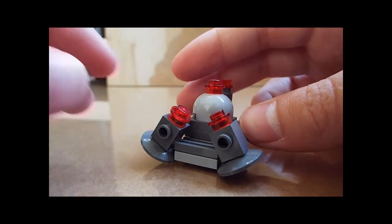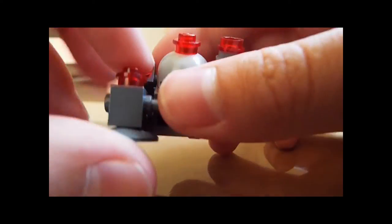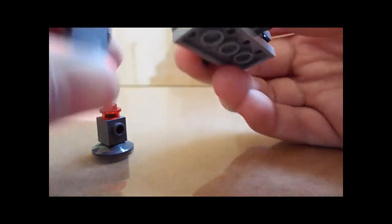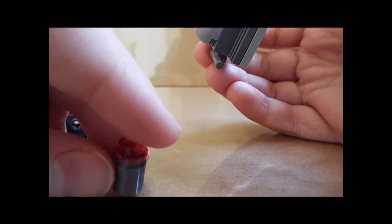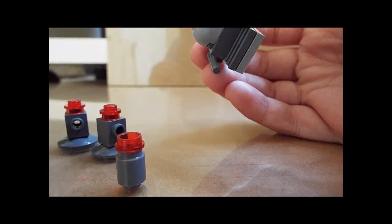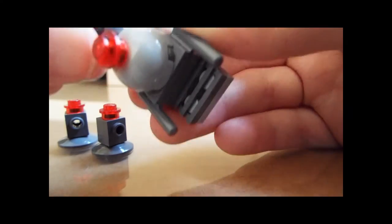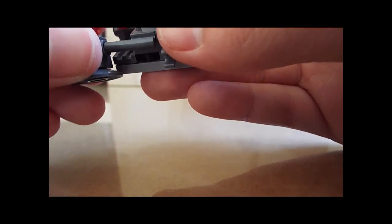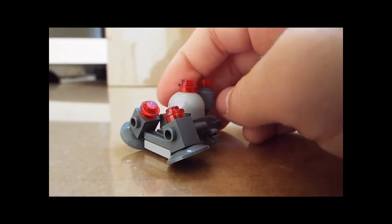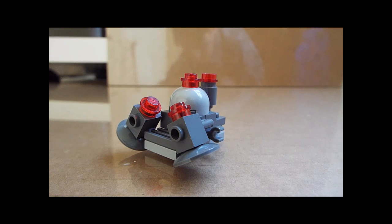So now that you built this, you can make some variations with it. You can take these off and they can act as separate droids, which is pretty cool. You can also take this one off - they can act as separate droids. And this actually looks pretty cool without them. But in my opinion, it looks a lot better with them still on. So you can do it however you want, but this is just an outline.